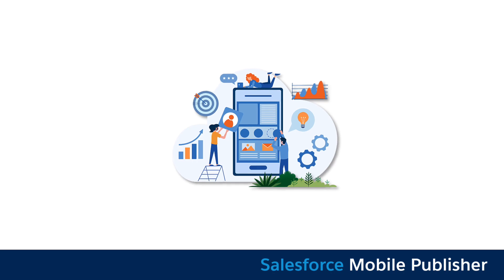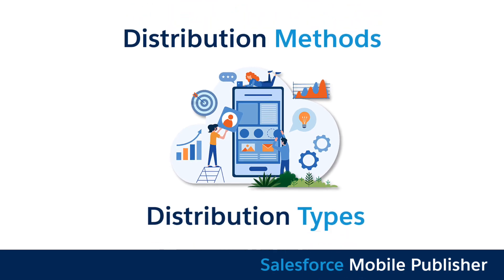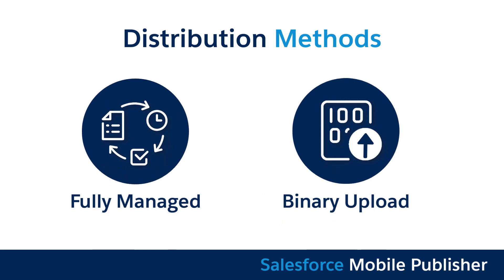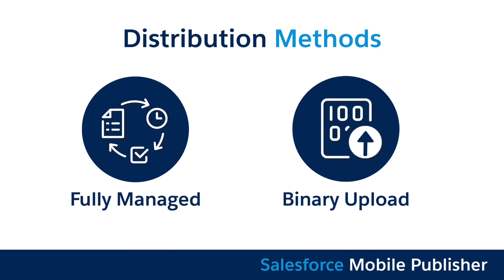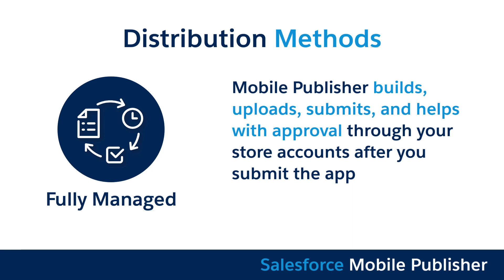App distribution consists of distribution methods and distribution types. Let's start with the two distribution methods: Fully Managed and Binary Upload. With the Fully Managed distribution method, Mobile Publisher builds, uploads, submits, and helps with approval through your store accounts after you submit the app.